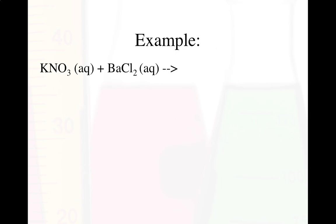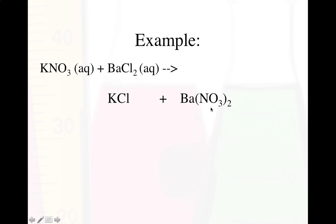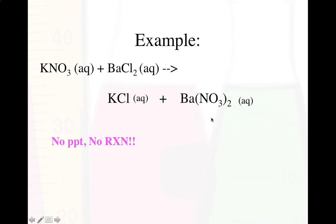Let's try another example: potassium nitrate and barium chloride. The products would be KCl (potassium 1+, chlorine 1−) and barium nitrate Ba(NO₃)₂ (barium 2+, nitrate 1−, criss-cross gives subscript 2). Checking the chart: halogens are generally soluble, potassium is not an exception so KCl is aqueous; barium nitrate is also soluble. Since there's no precipitate formed, this is no reaction — don't balance it.